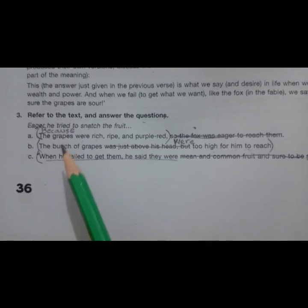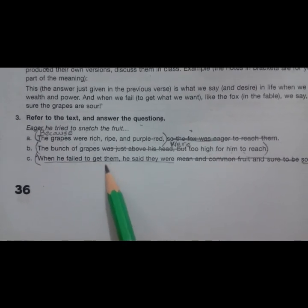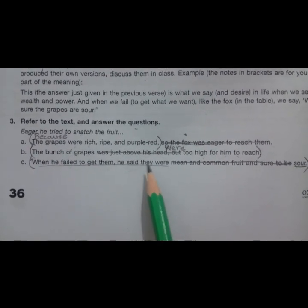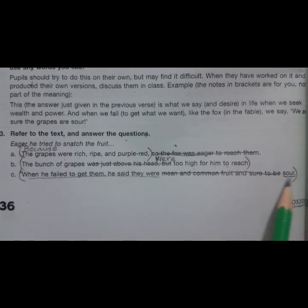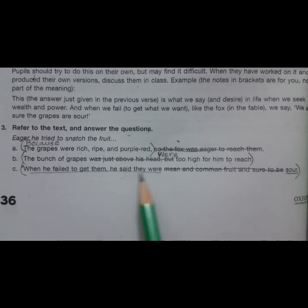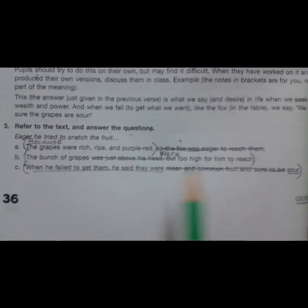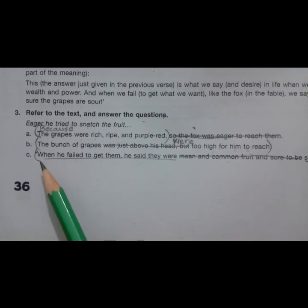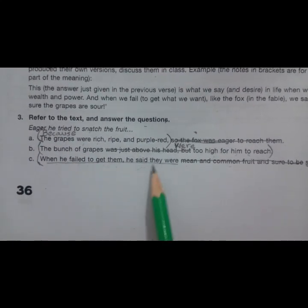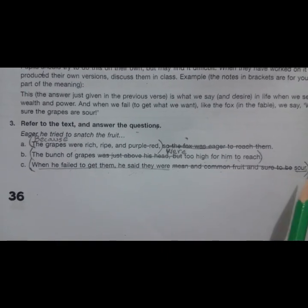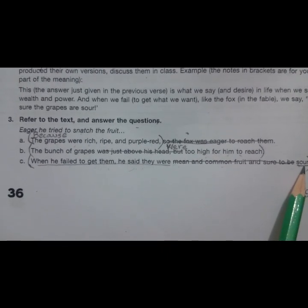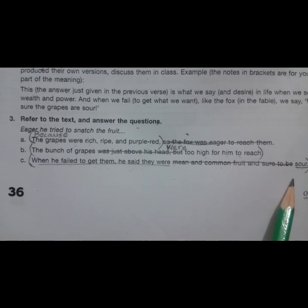So the answer is that when he failed to get them, he said that they were sour. Or you can also write that they were mean or common or sour. So the simple answer is that when he failed to get them, he said that they were sour. So he changed his opinion in the end and he said that the grapes were sour.